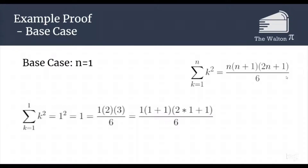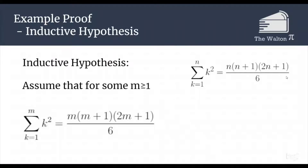Next we are going to state our inductive hypothesis, which is we assume that for some m greater than or equal to 1 — because 1 is our base case, that is our lowest value that we can take for m — we assume that for any of those m, the sum from k equals 1 to m of k squared is equal to m times m plus 1 times 2m plus 1 all over 6.